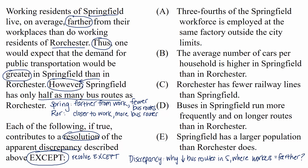It's possible that you're already thinking of reasons the situation could be explained, but we don't need to make a prediction for these question types — there could be so many possible explanations. The most important piece is to understand the discrepancy in a very clear way. Now we move to the choices and evaluate each one. We're going to ask ourselves: does this choice's information provide the light bulb that we're looking for? Does it make us say, now I understand why Springfield has only half as many bus routes as Rochester, even though their workers live farther from work?